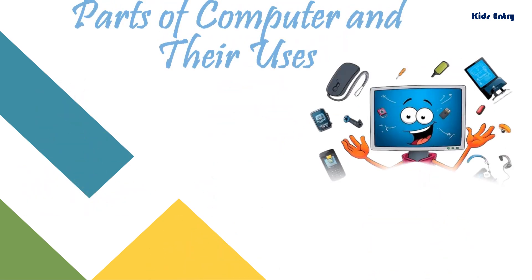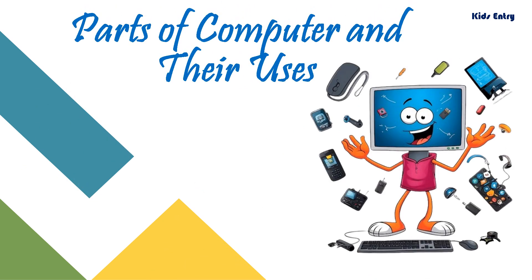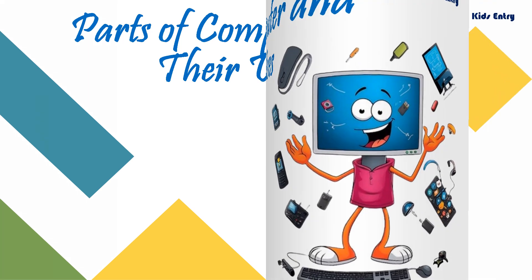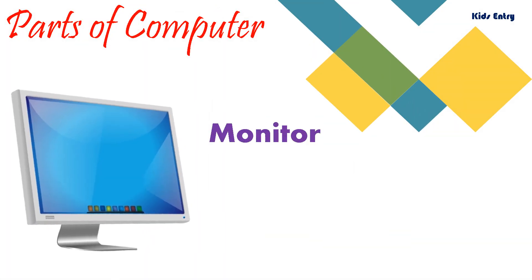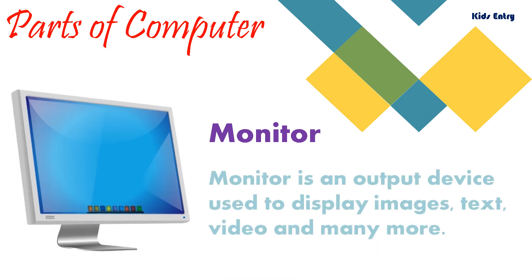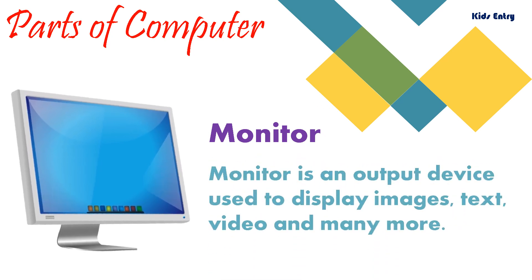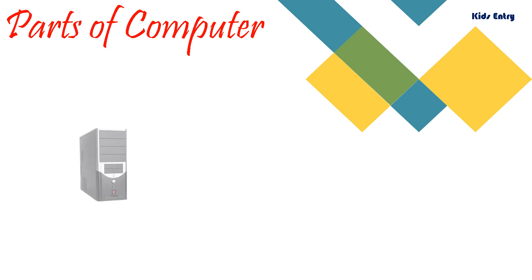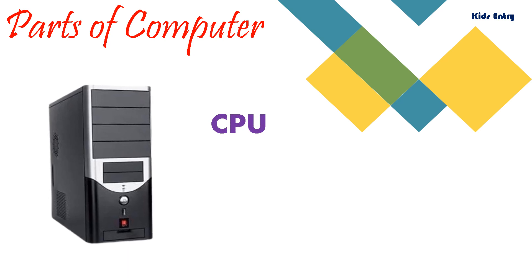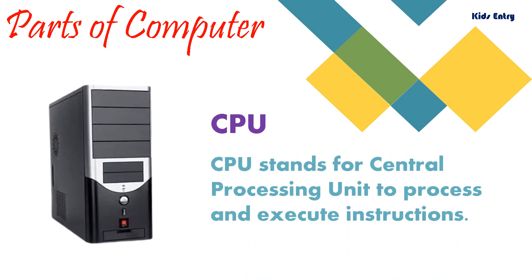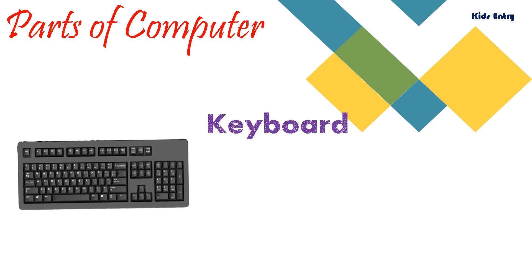In this video we will learn parts of a computer and their uses. Monitor: a monitor is an output device used to display images, text, video, and many more. CPU: CPU stands for Central Processing Unit, used to process and execute instructions.